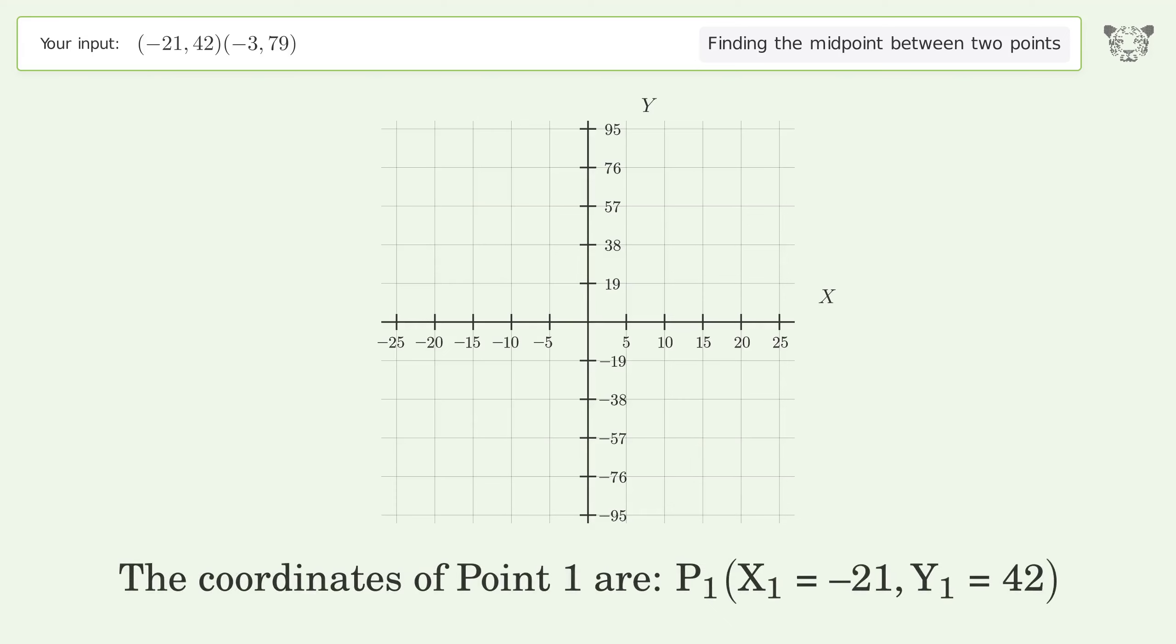The coordinates of Point 1 are x1 equals negative 21, y1 equals 42. The coordinates of Point 2 are x2 equals negative 3, y2 equals 79.